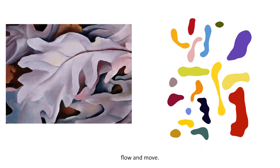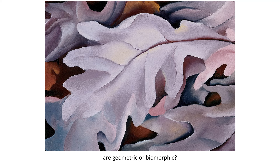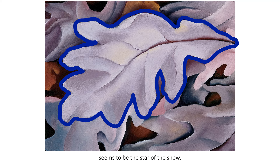Would you say the shapes in this painting are geometric or biomorphic? When you look at this painting, what shape stands out most for you? The leaf in the center of the painting seems to be the star of the show. A light is shining on it, and we see the entire leaf as it rests, just so, on top of the other leaves.